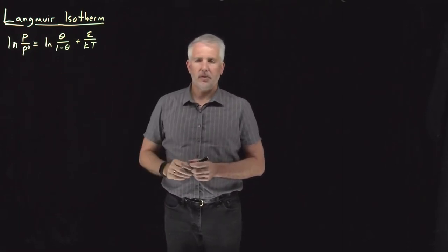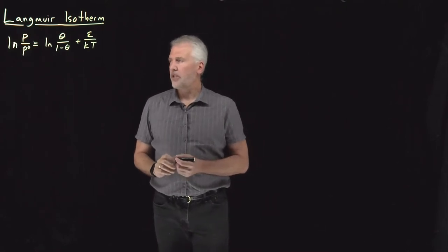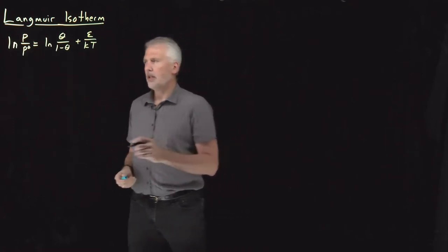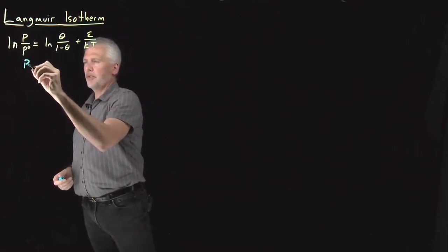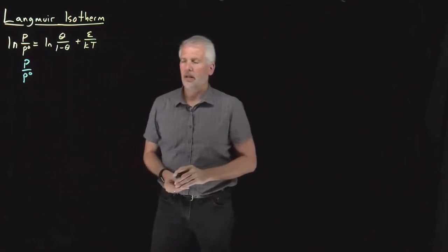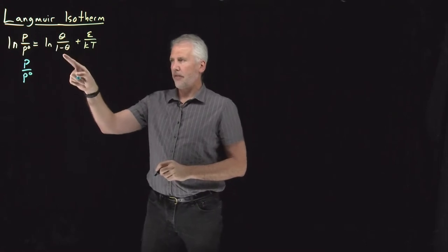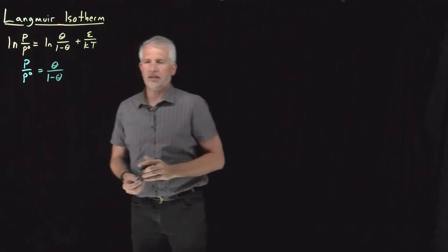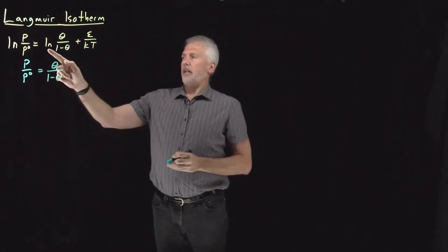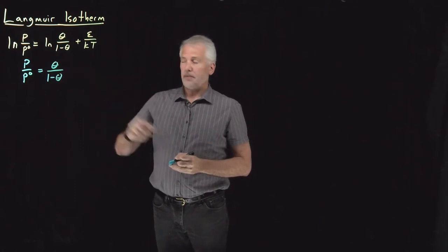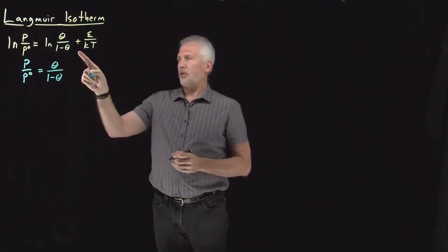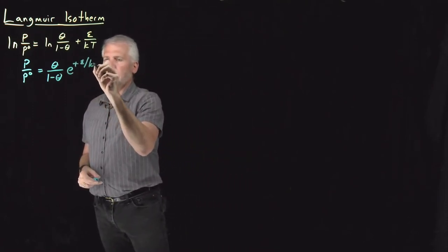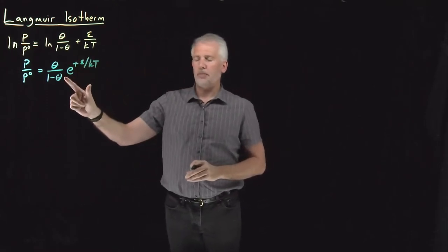Let's see if we can understand this equation in a little more detail. First, we can simplify it by getting rid of the natural logs. If I exponentiate both sides, e to the ln becomes just the argument: pressure over pressure-naught. On the other side, e to the ln of θ over (1 minus θ) becomes just θ over (1 minus θ). Exponentiating this sum gives the product of the two exponentials, so e to the ε over kT is multiplying — the sum became a product after exponentiating.